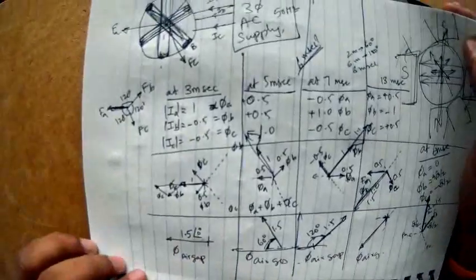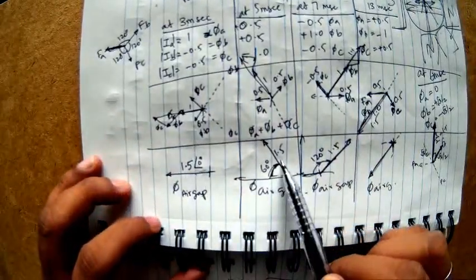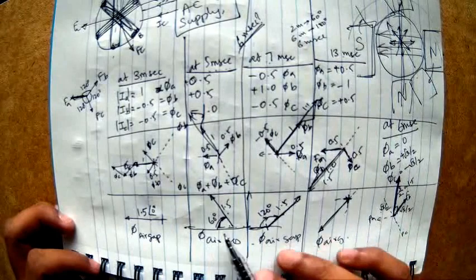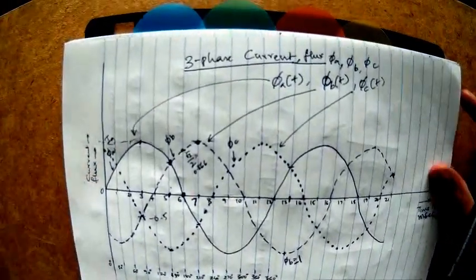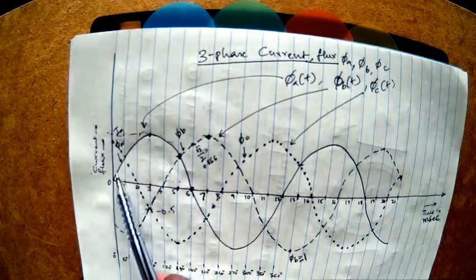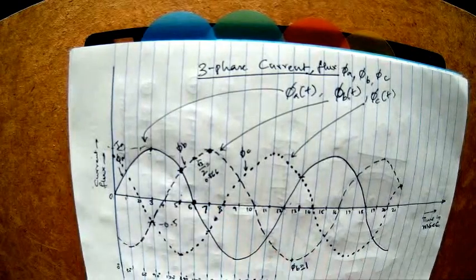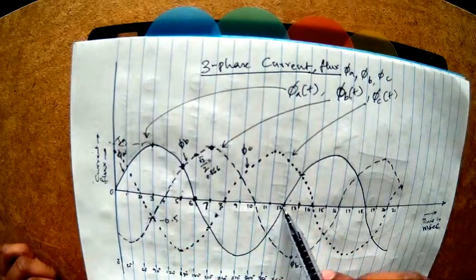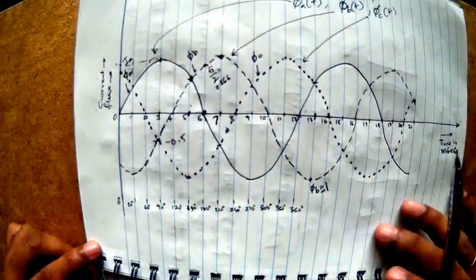If you go back and refer to my previous video, I was saying for every 2 milliseconds the air gap flux is rotating by 60 degrees. Every 1 millisecond the air gap flux is rotating by 30 degrees. If I look at the three-phase currents themselves, you notice that every 1 millisecond represents 30 degrees. So the speed of rotation of the magnetic poles is exactly that of the speed of rotation of your three-phase supply. In other words, if I cover one cycle of my AC supply, the magnetic fields are rotating by 360 degrees.